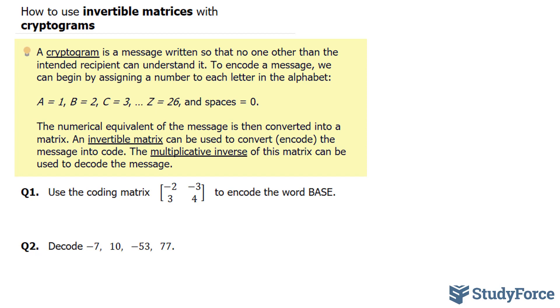A cryptogram is a message written so that no one other than the intended recipient can understand it. To encode a message, we can begin by assigning a number to each letter in the alphabet. For example, A = 1, B = 2, C = 3, and so on, and spaces are equal to 0.